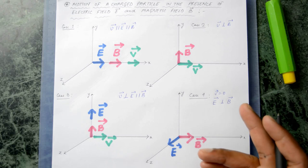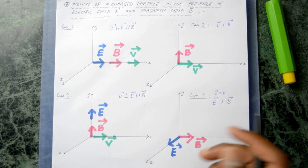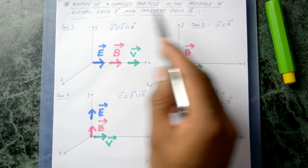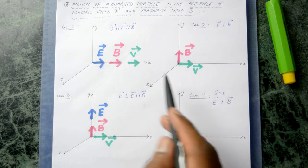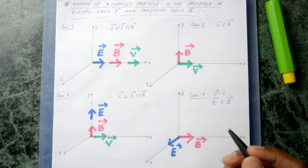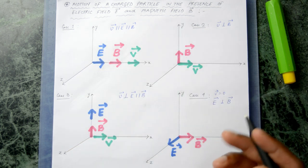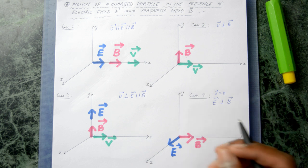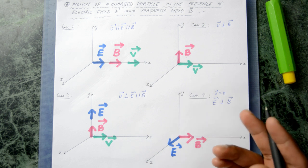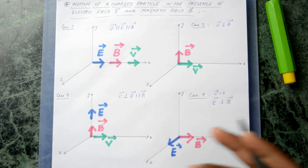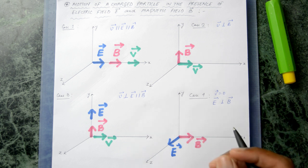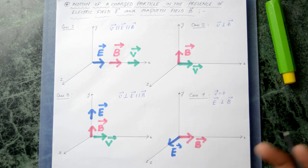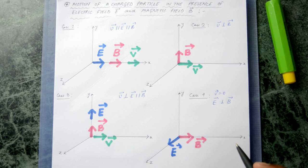In this video I'm going to discuss the motion of a charged particle in the presence of an external electric field and a magnetic field. I'm going to talk in detail and try to obtain the nature of the trajectory of the charged particle in different kinds of scenarios where the external electric field and magnetic field are present.